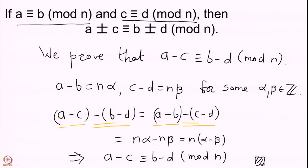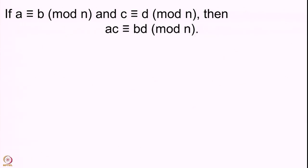Let us turn to the second statement: whenever A ≡ B (mod N) and C ≡ D (mod N), then the product AC is congruent to BD modulo N. Once again I will give you a minute to think about it — please feel free to pause the video and think for yourself. The more you think about these problems yourself, the clearer these things will be.